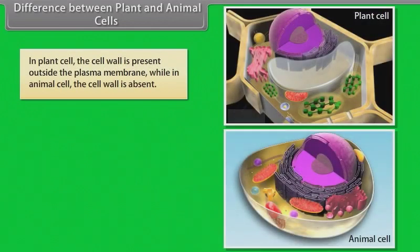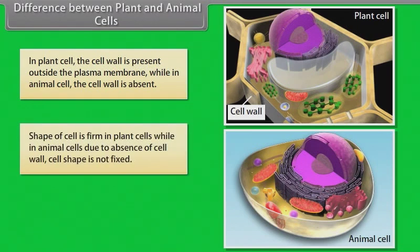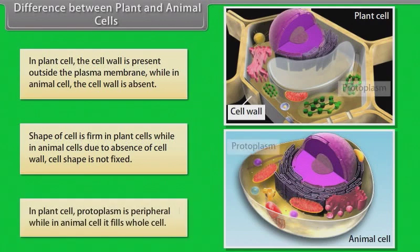In plant cells, the cell wall is present outside the plasma membrane, while in animal cells, the cell wall is absent. The shape of the cell is firm in plant cells, while in animal cells, due to the absence of a cell wall, cell shape is not fixed. In plant cells, protoplasm is peripheral, while in animal cells, it fills the whole cell. In plant cells, the nucleus lies in peripheral protoplasm and is oval in shape, while in animal cells, the nucleus is central in position and is round in shape.